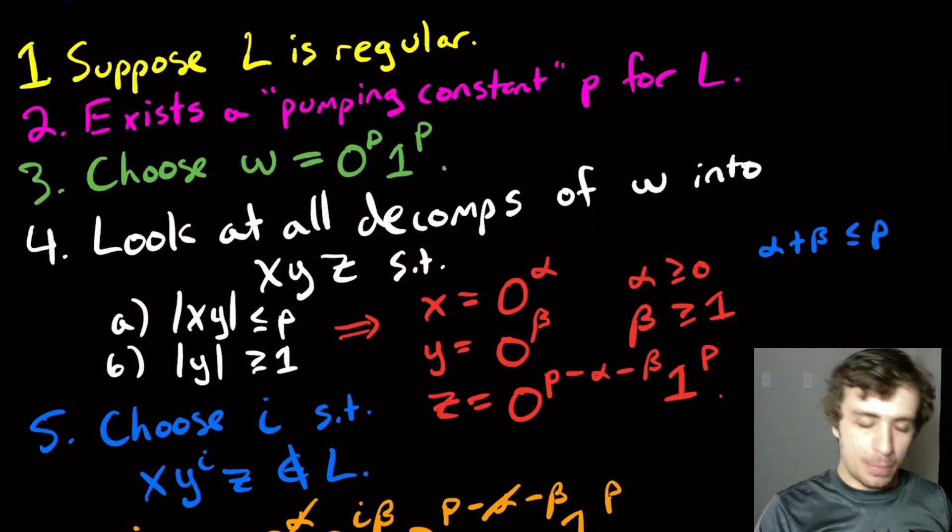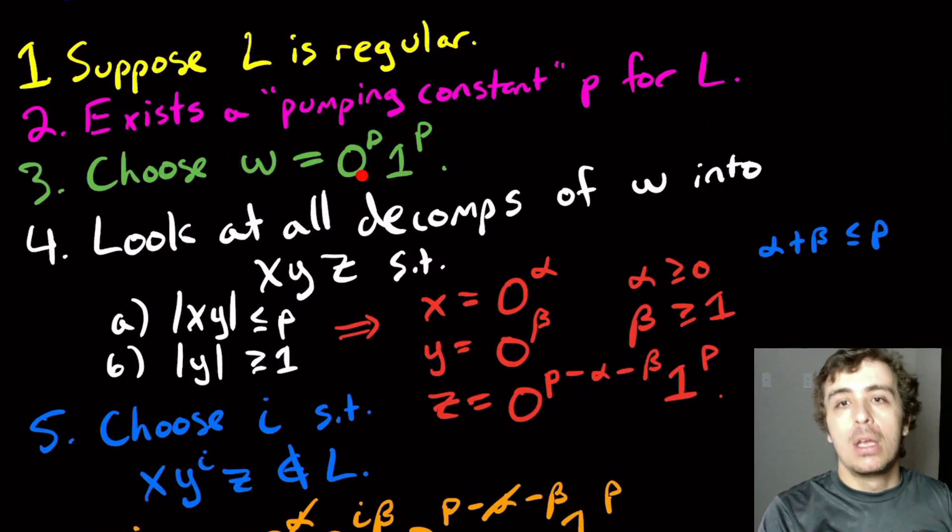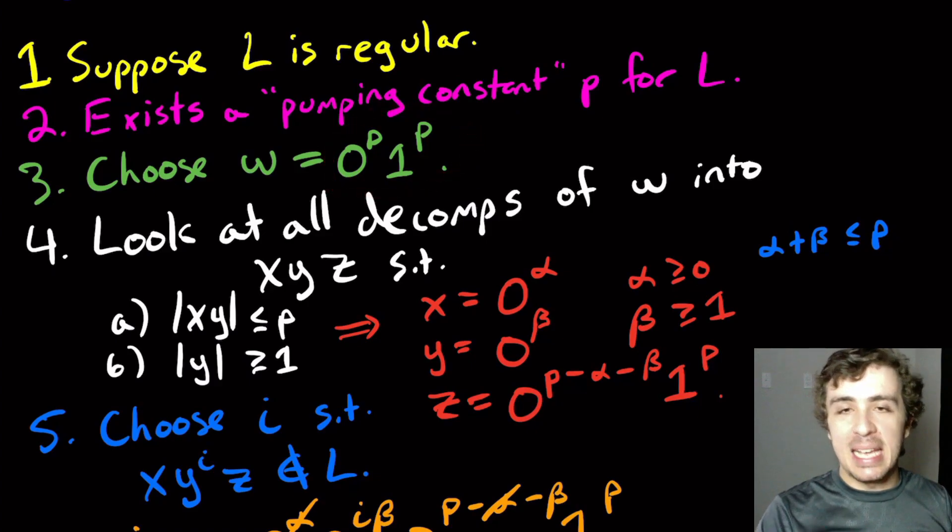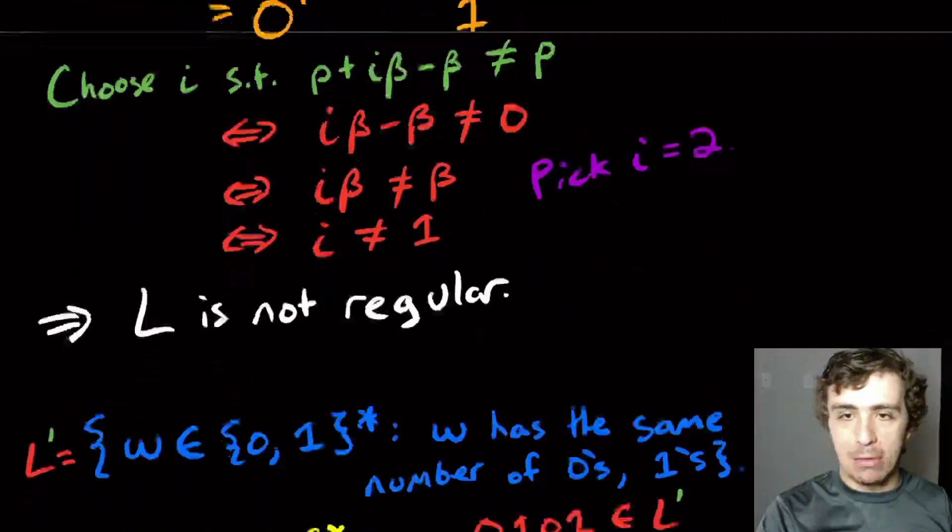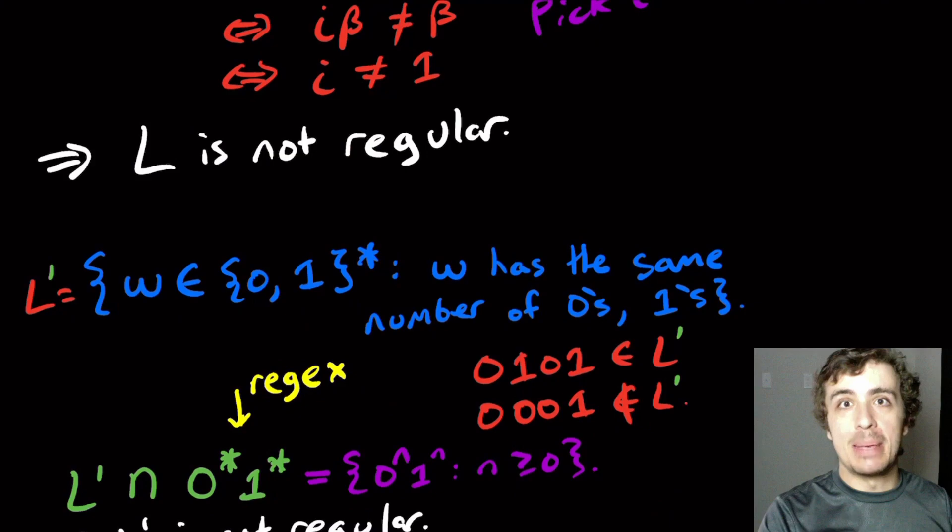Well, let's see. So suppose I just change this to L', L'. Well, here, this string is in the bottom language because it has the same number of zeros and ones.